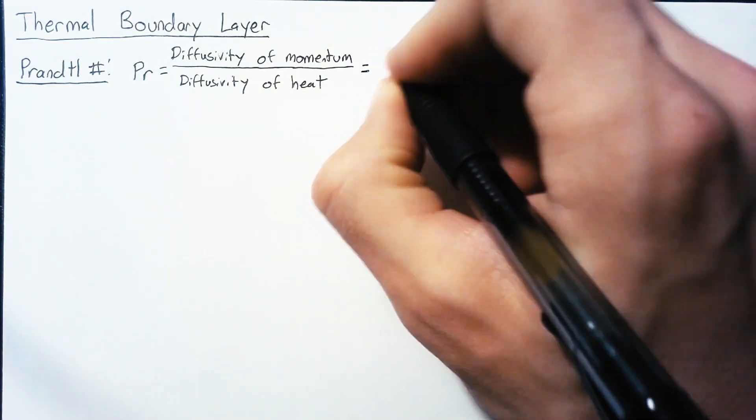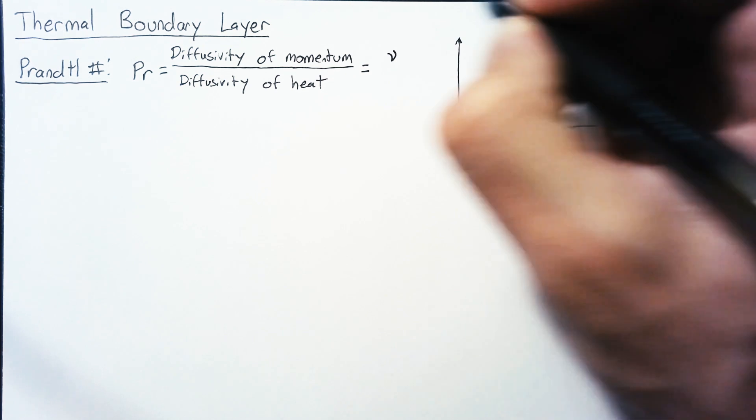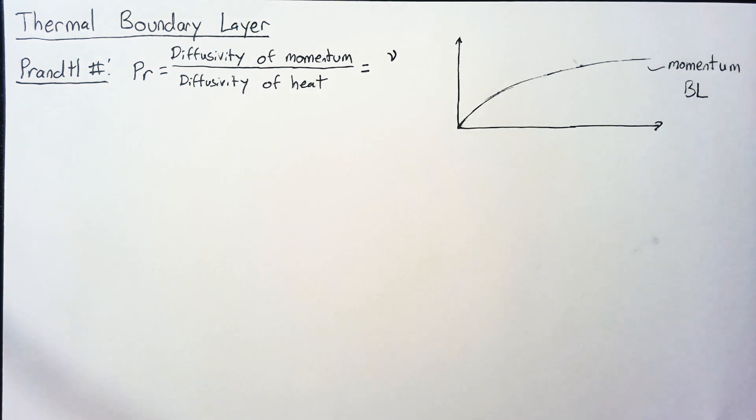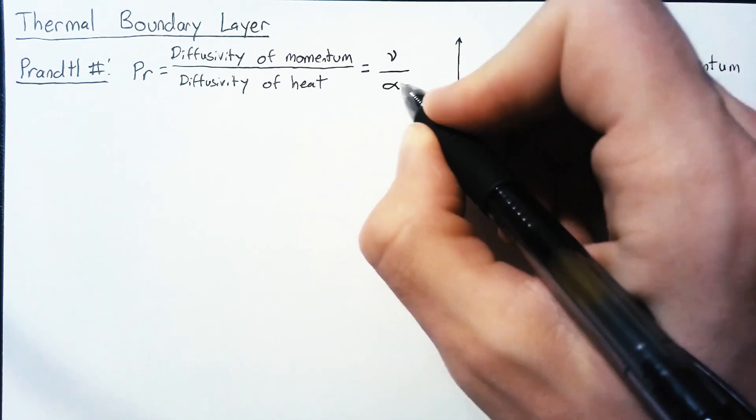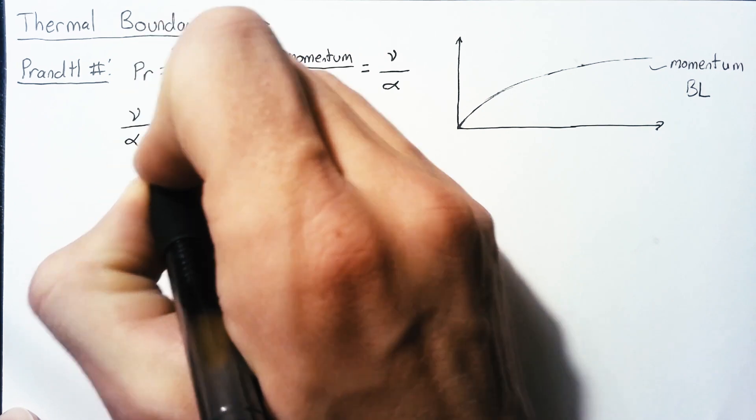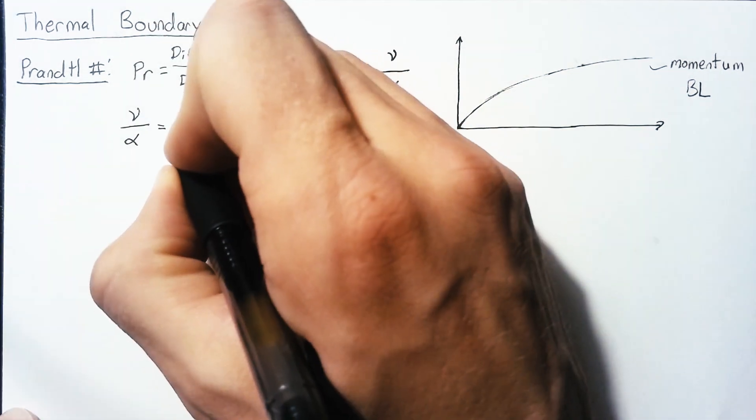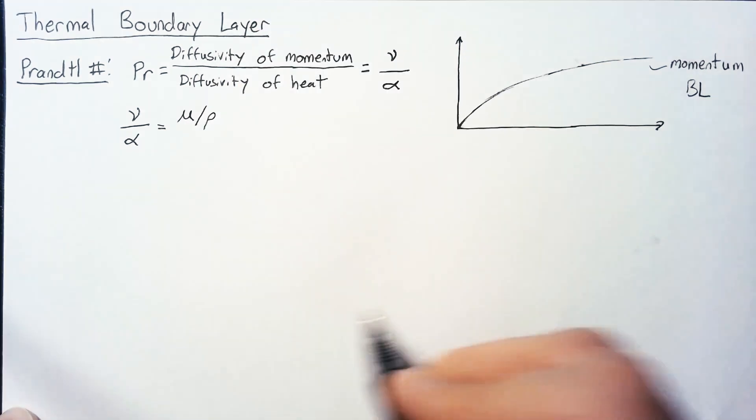If you remember, the diffusivity of momentum is the kinematic viscosity nu, whereas the diffusivity of heat you write as alpha. So the Prandtl number can be written most simply as nu over alpha. However, we can simplify that a little bit. Nu is mu, the dynamic viscosity, divided by the density rho.